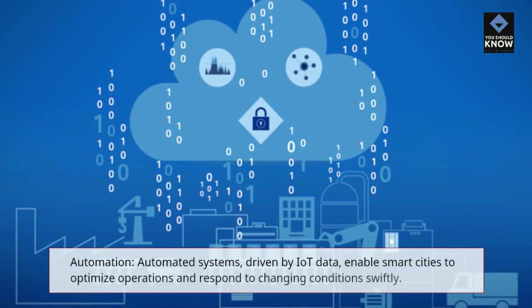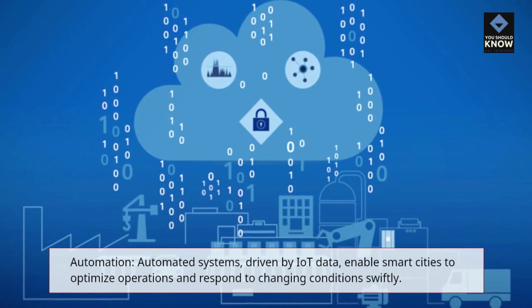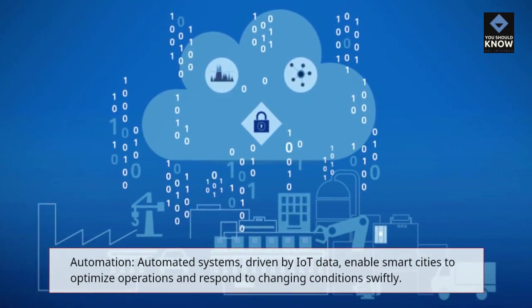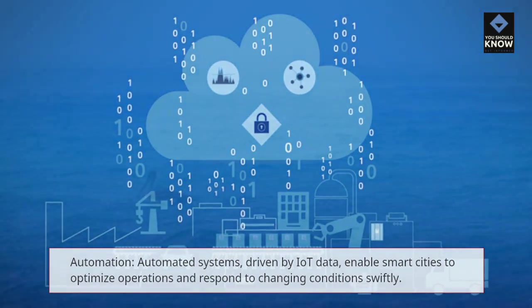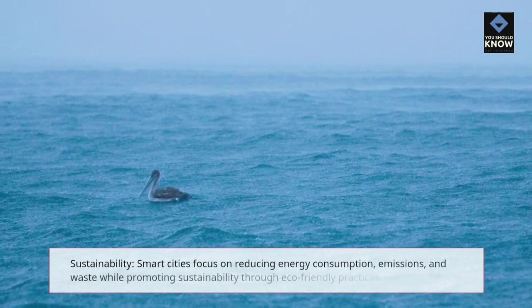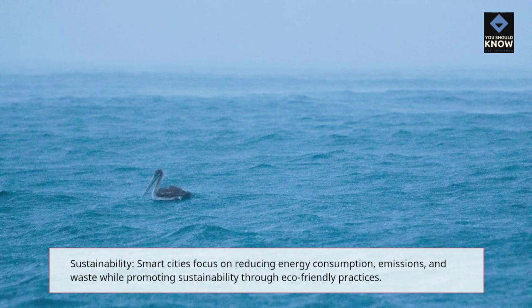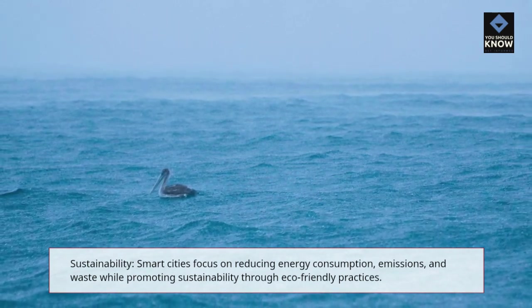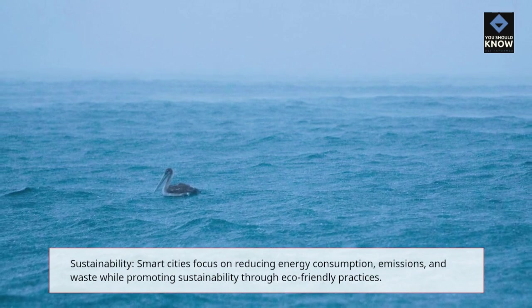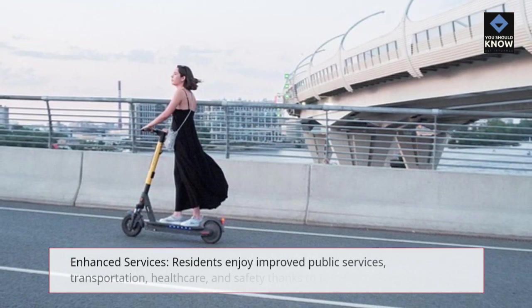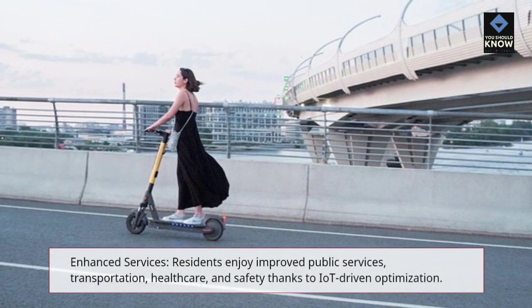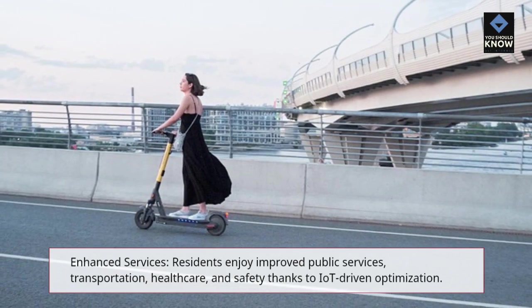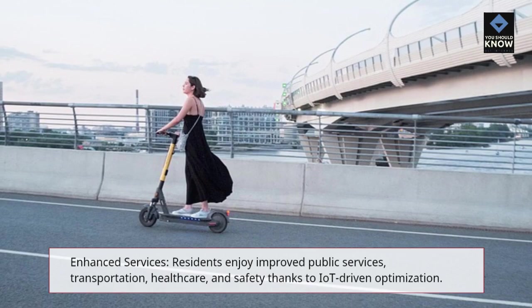Automation: automated systems, driven by IoT data, enable smart cities to optimize operations and respond to changing conditions swiftly. Sustainability: smart cities focus on reducing energy consumption, emissions, and waste while promoting sustainability through eco-friendly practices. Enhanced Services: residents enjoy improved public services, transportation, healthcare, and safety thanks to IoT-driven optimization.